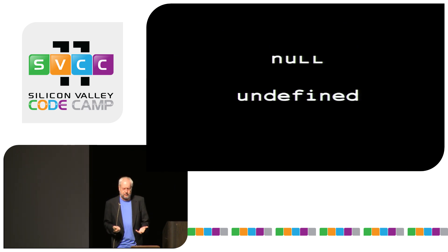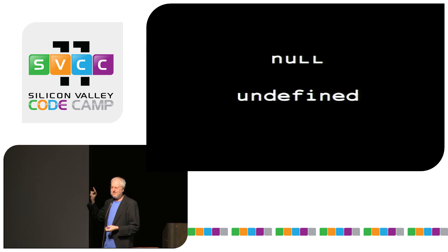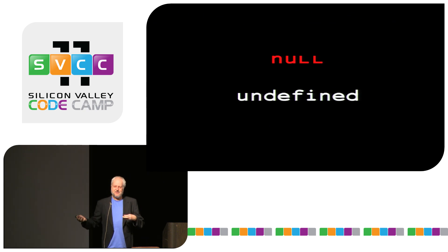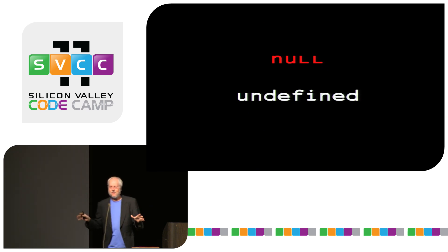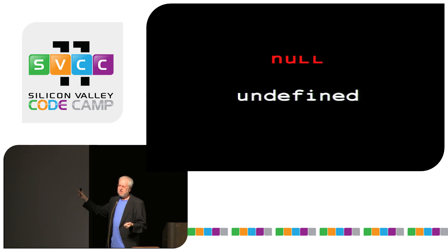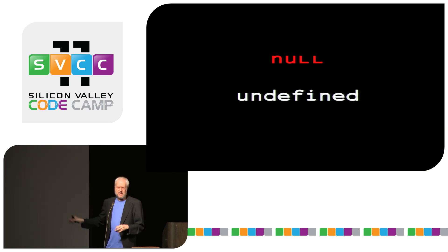JavaScript provides two bottom values — null and undefined — which was a mistake. You shouldn't have two of these things. There's a very good argument you shouldn't have either, but if you're going to have one, you should only have one. I want to throw away null — which is unfortunate because it's the more universal, correct name. 'Undefined' is a confusing name: you can define a variable whose value is 'undefined,' so it's defined and undefined at the same time. But I prefer undefined in JavaScript because it's the one the language itself uses. Also, typeof null returns 'object,' which is completely wrong.